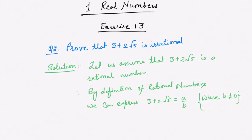Let us start with Exercise 1.3, question number 2: prove that 3 plus 2 root 5 is irrational. We have to prove that 3 plus 2 root 5 is an irrational number. Now let us begin with the solution.